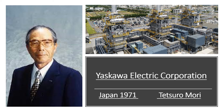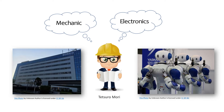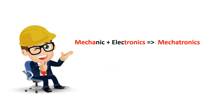The creation of the name mechatronics goes back to 1971, when the Japanese engineer Tetsuo Mori, who was working at Yaskawa Electric Corporation, thought about the combination of mechanical, electronics, and other parts in engineering. He created the name mechatronics, which by word is a combination of 'mecha' from mechanical and 'tronics' from electronics.